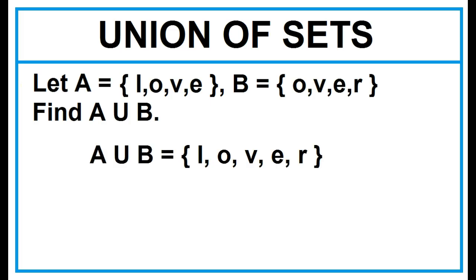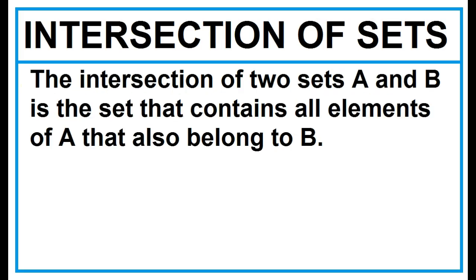Another example: Given Set A and Set B, find A Union B. Without repetition, if we combine the elements of Set A and Set B, A Union B contains the elements L, O, V, E, R.